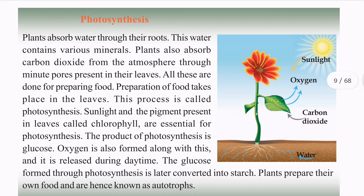How do plants absorb carbon dioxide? They absorb it from the atmosphere through minute pores present in their leaves. All these are done for preparing food.